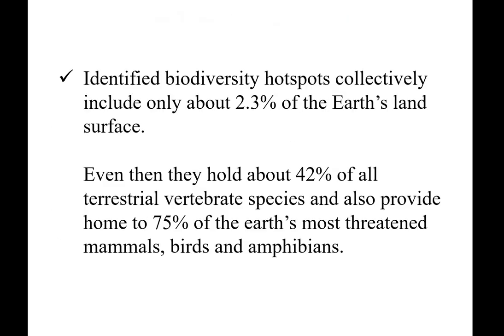Identified biodiversity hotspots collectively include only 2.3 percent of the Earth's land surface. Even then, they hold about 42 percent of all terrestrial vertebrate species and also provide home to 75 percent of Earth's most threatened mammals, birds, and amphibians.